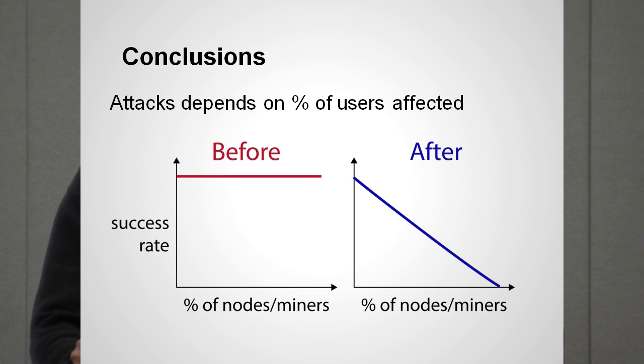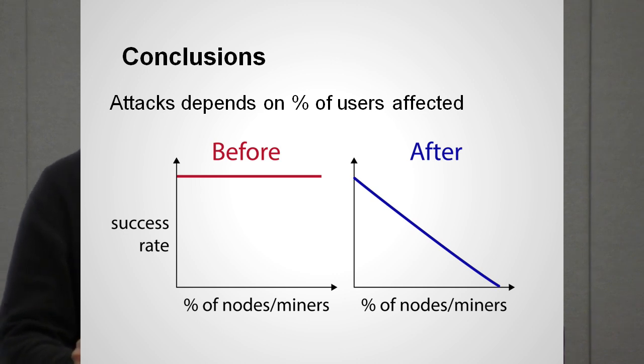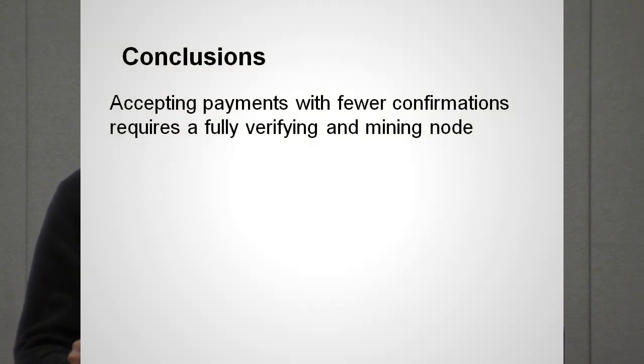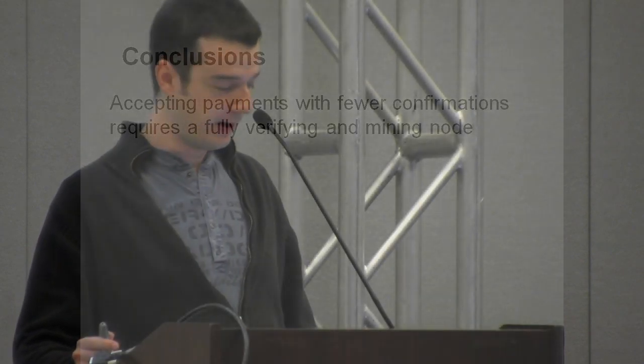If the proposed change is adopted, the probability of a successful attack will now depend not only on the number of blocks written and the attacker's hash rate, but also on the percentage of full nodes and miners affected. Finally, if a merchant desires to accept payments often and consistently with as few confirmations as possible, he would need to invest in increasing his ability to impact network behavior — namely, being a full, verifying and relaying node, and more importantly, being a miner. Thank you.